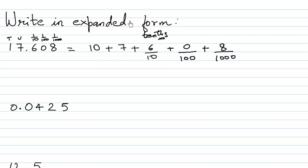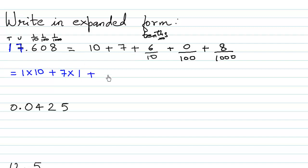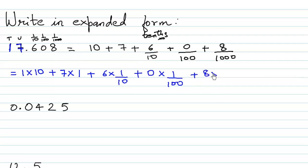There is another way of writing the same number in the expanded form: 1 multiplied by the tens place, plus 7 multiplied by the units place which is 1, plus 6 multiplied by 1 upon 10, plus 0 multiplied by 1 upon 100, plus 8 multiplied by 1 upon 1000. This is also another way of writing it in expanded form.